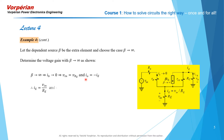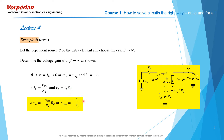Substituting the emitter current Vin/RE into the expression for output voltage equal to Iout·RC, we get the gain with beta going to infinity. This completes the first calculation of the extra element theorem, in which the extra element has been taken out by letting its value go to infinity.